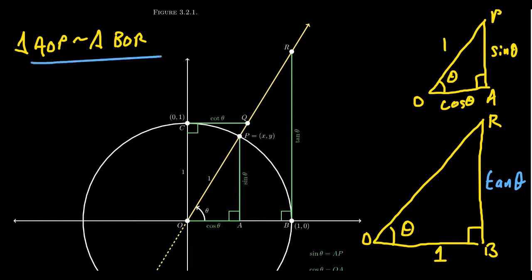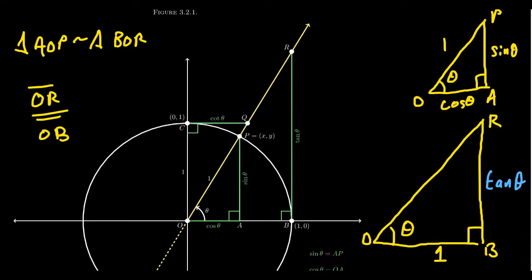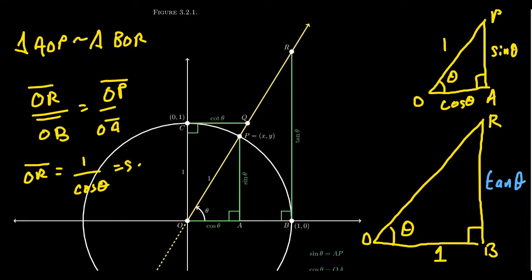Continuing with the similar triangle argument, the hypotenuse OR of triangle BOR equals secant. Taking OR over OB and comparing to OP over OA: OB is 1, OP is also 1 (radius of the unit circle), and OA is cosine theta. So OR equals 1 over cosine theta, which equals secant theta. Therefore, the line segment OR has length secant of theta.